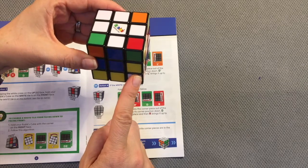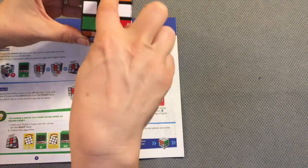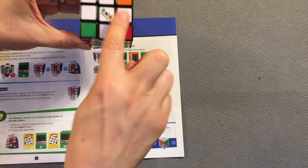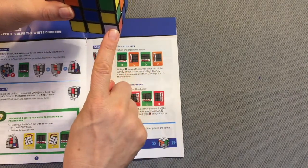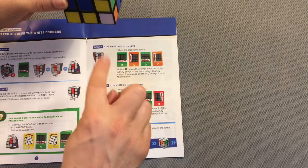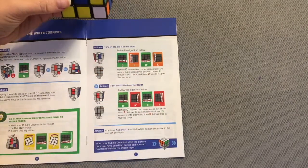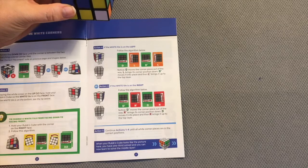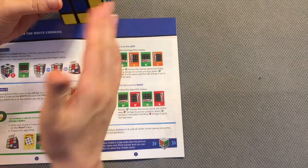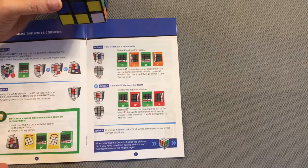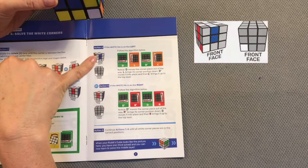Keeping the white cross on the up face, which I have here, hold your Rubik's Cube so the white tile is on the front face. I am now ready to move to action 4. Action 4 asks you to look at the orientation, either right or left, where your top corner tile is.